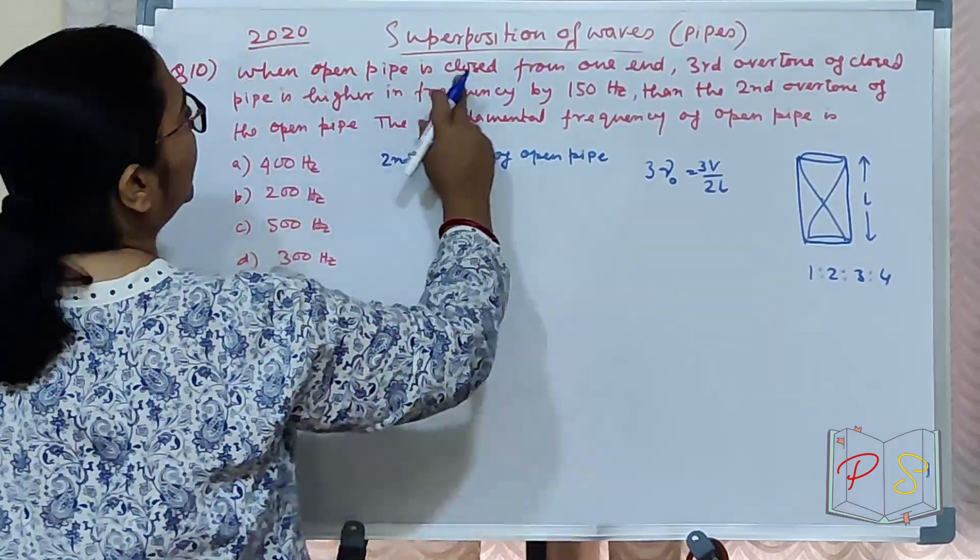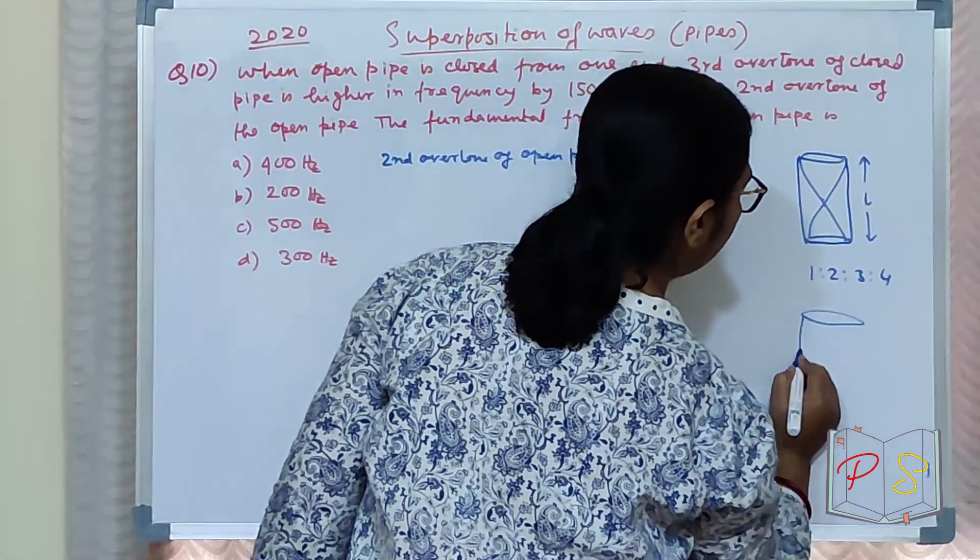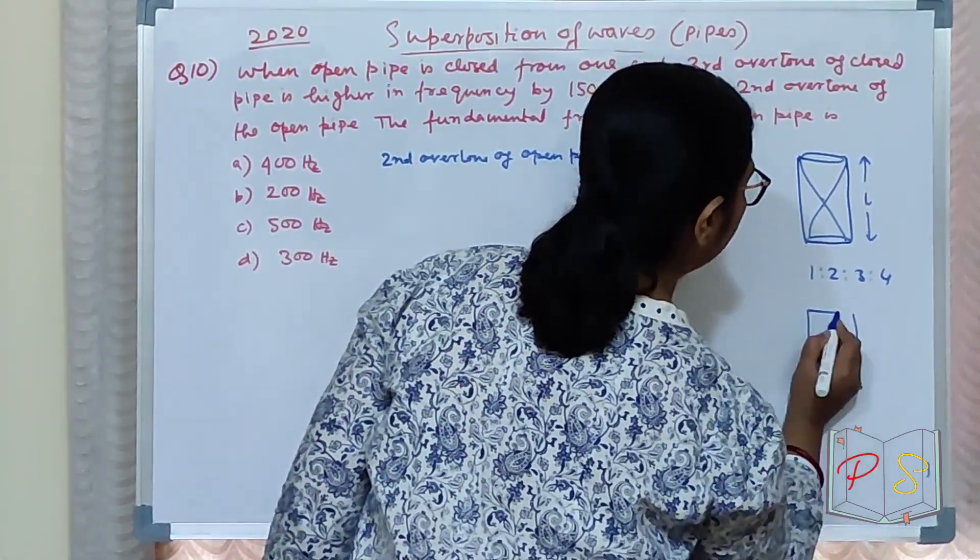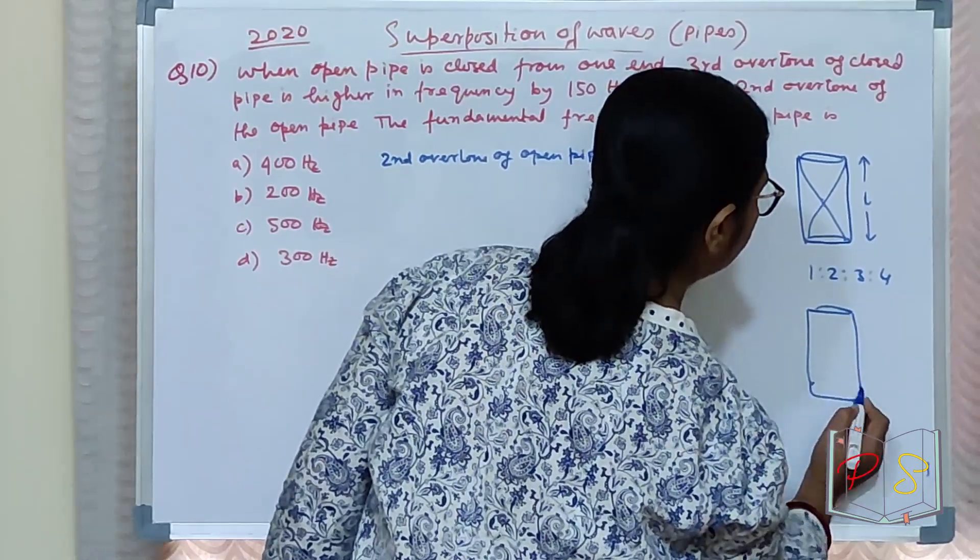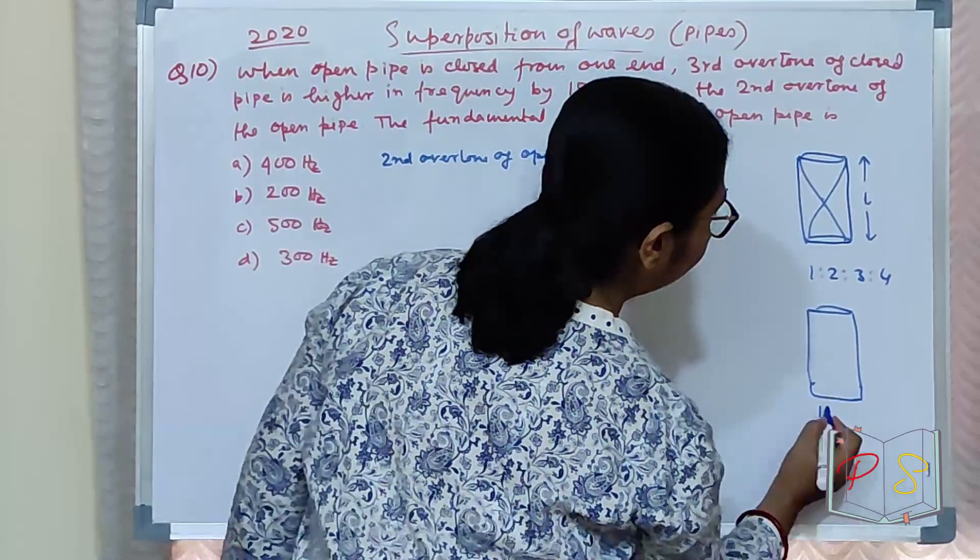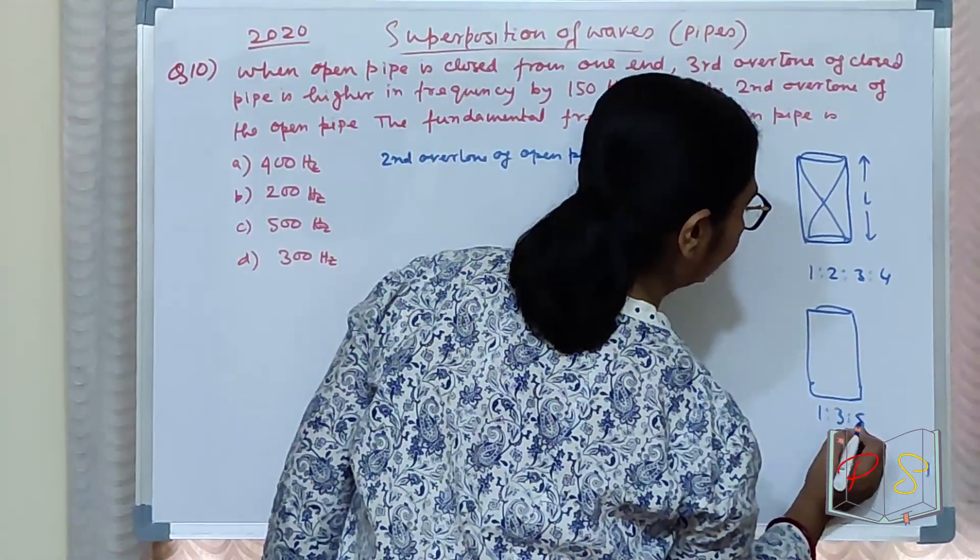Now when the open pipe is closed from one end, we have the third overtone of the closed pipe. The same pipe is now closed. What happens to the ratio? The ratio of overtones becomes 1:3:5:7.